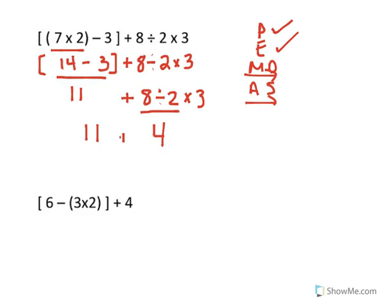Then I'm going to write everything just the way it is. Do I have any more multiplication or division? Yes — four times three. And four times three is twelve. Do I have any more multiplication or division? No. So all I have left is addition and subtraction — eleven plus twelve.